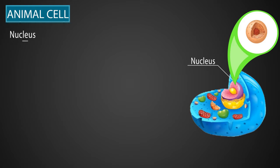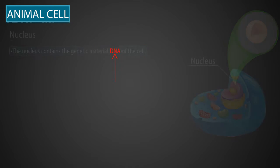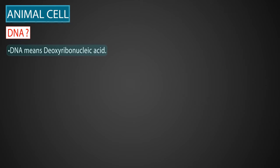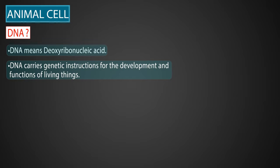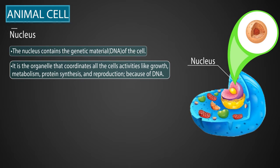Nucleus: The nucleus contains the genetic material — the DNA of the cell. DNA means deoxyribonucleic acid. It carries genetic instructions for the development and function of living things. The nucleus is the organelle that coordinates all the cell activities like growth, metabolism, protein synthesis, and reproduction, because all the information regarding coordination of these activities lies in the DNA.